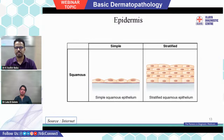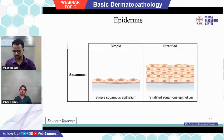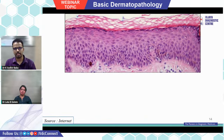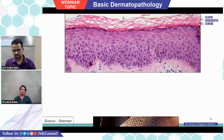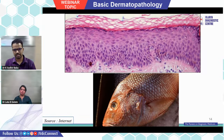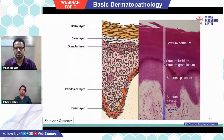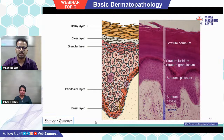The epidermis is called stratified squamous epithelium — stratified because it has layers of cells, and squamous because the keratinocytes look like scales, like fish scales. Within the epidermis we see five layers, starting from the bottom: stratum basale, then stratum spinosum, then stratum granulosum with its blue color, then the acellular stratum lucidum, and finally the stratum corneum.